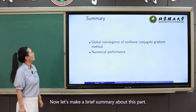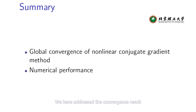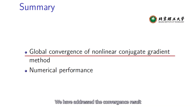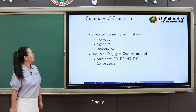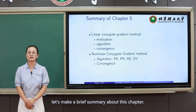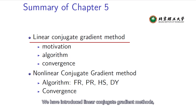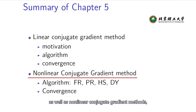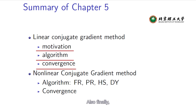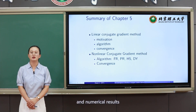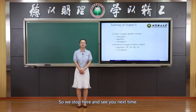Let's make a brief summary. We have addressed the convergence result for the nonlinear conjugate gradient method and presented some numerical performance comparisons for the PR and FR methods. For this chapter overall, we introduced both linear and nonlinear conjugate gradient methods, including their ideas, algorithms, convergence rates, and global convergence, along with numerical examples. We stop here — see you next time!